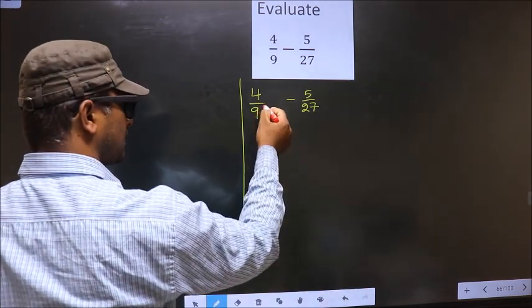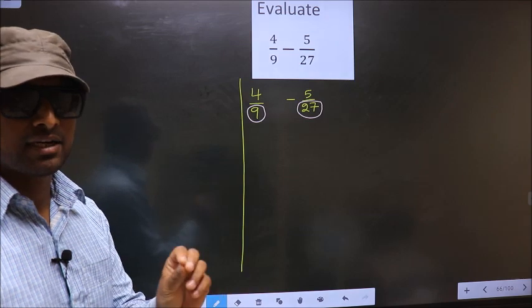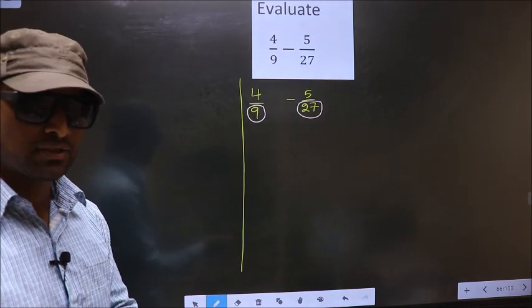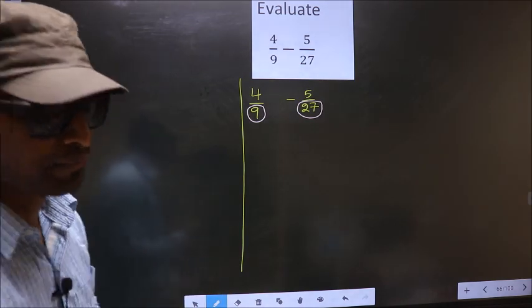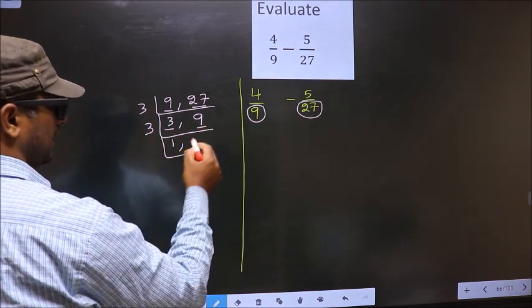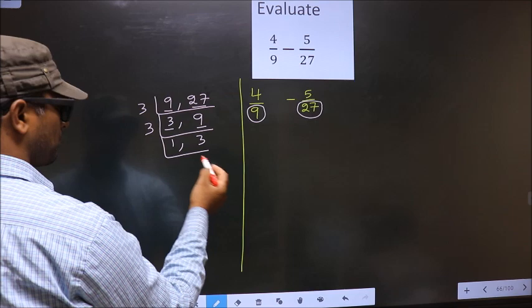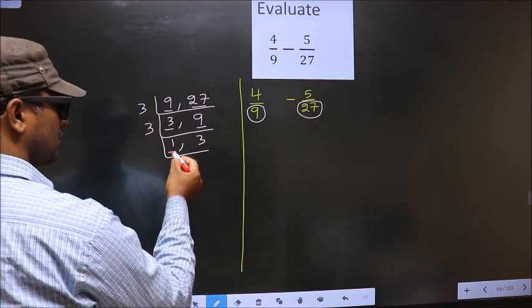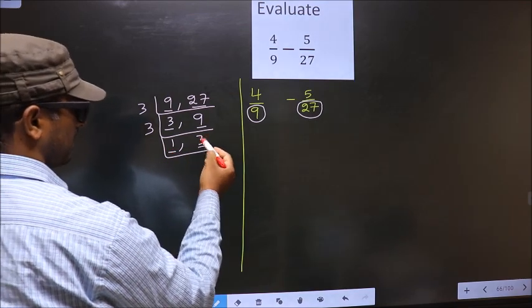In this fraction the denominator is 9. Here the denominator is 27. The denominators are not same. Whenever the denominators are not same, we should take LCM of them.